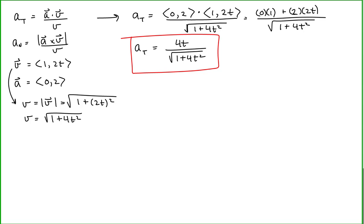This tells us how much the curve is accelerating in a direction parallel to a tangent vector on the curve at any point. Now let's find the component of acceleration normal to the curve, using the magnitude of the cross product of acceleration and velocity divided by the speed of the curve. We need to find the cross product.